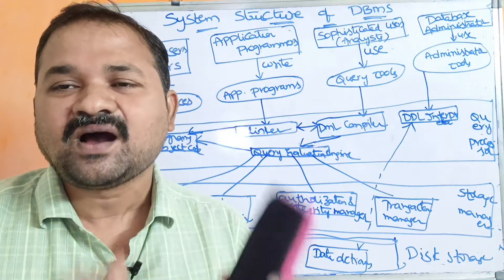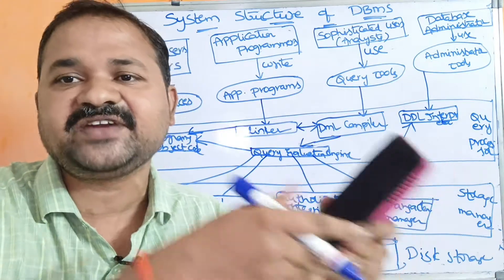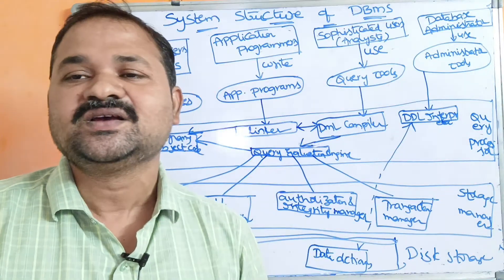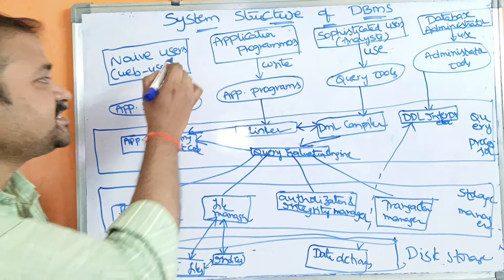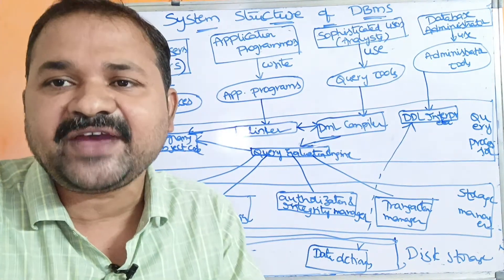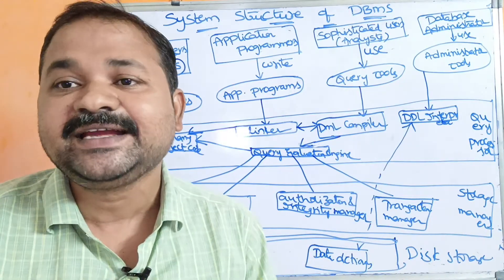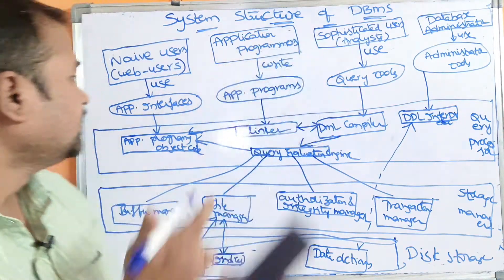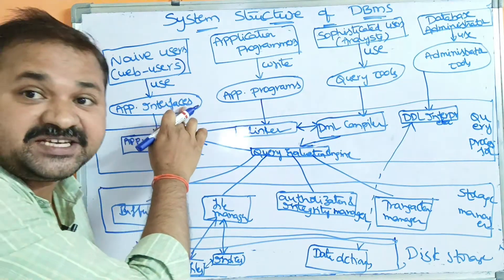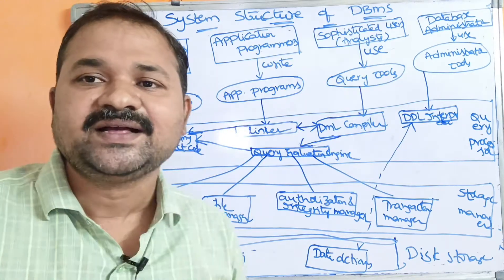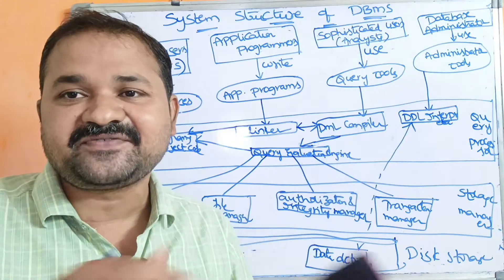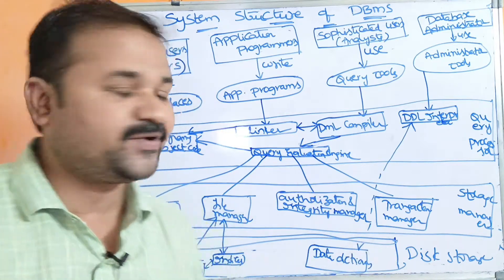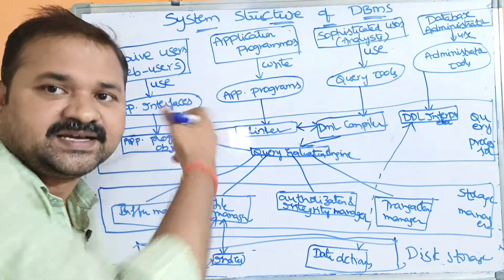So Google Pay users, Phone Pay users, or any web application users, when we are working with some bank application or bank application employees — all those are nothing but naive users who interact through a graphical user interface. Naive users use application interfaces, which are nothing but graphical user interfaces. With the help of that, we can deposit money or transfer money from one account to another account through online.